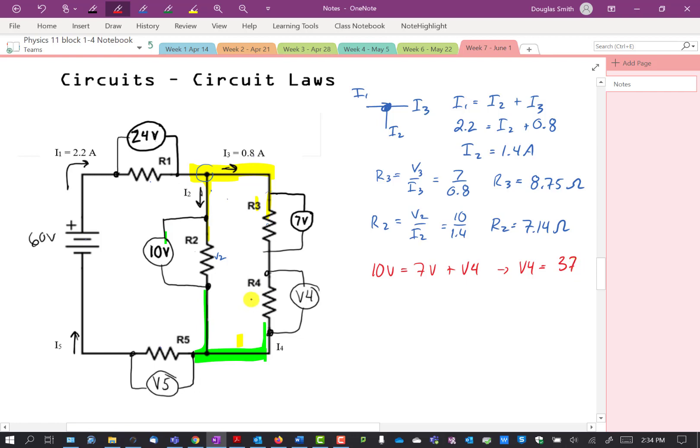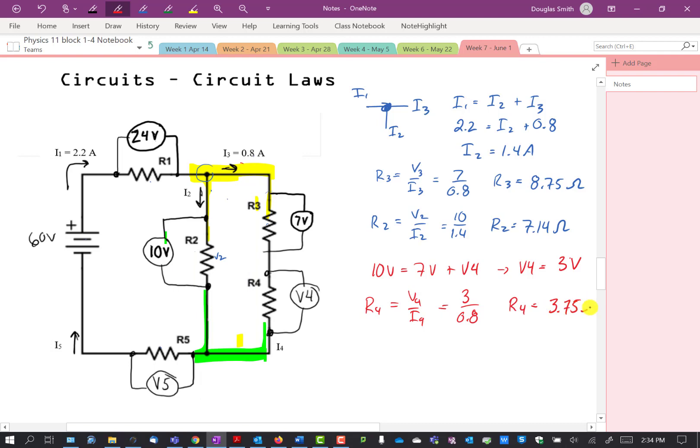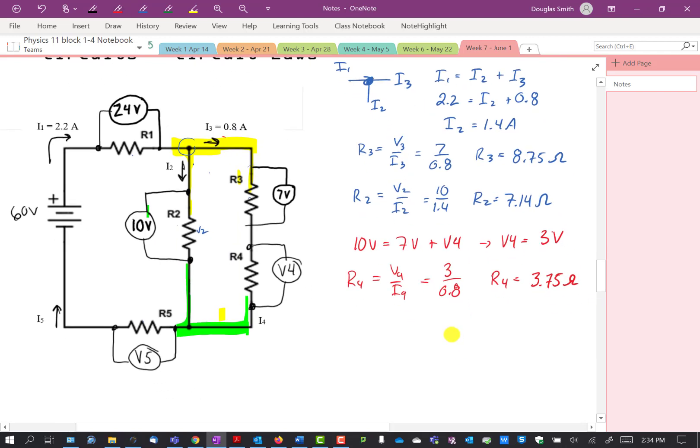We can then find R4. That's V4 over I4. So V4 is supposed to be 3 volts. 3 divided by I4 and I3 is the same. So I3 was 0.8. So R4 is 3.75 ohms. So we know that, that, that, that, that.